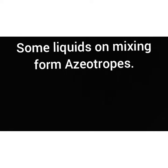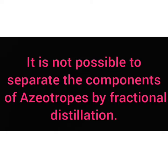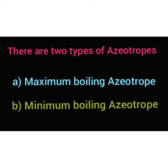Some liquids on mixing form azeotropes. Azeotropes are binary mixtures having the same composition in liquid and vapor phase and boil at constant temperature. It is not possible to separate the components of azeotropes by fractional distillation. There are two types of azeotropes: Maximum Boiling Azeotrope and Minimum Boiling Azeotrope.